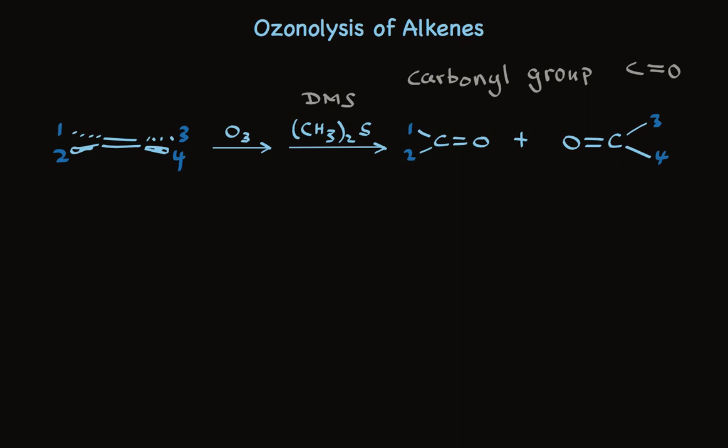So, to return to where I started, ozonolysis is an addition reaction that ends up in cleavage. You cleave the alkene double bond to make two carbonyl compounds. When the alkene is part of a ring, those carbonyl groups are still attached to each other, and we have a dicarbonyl compound as the product. Ozonolysis is widely used in organic chemistry.